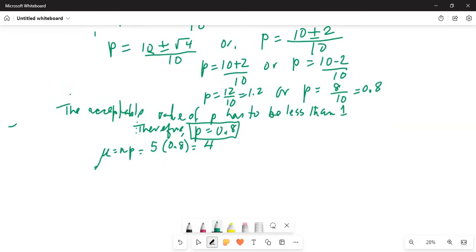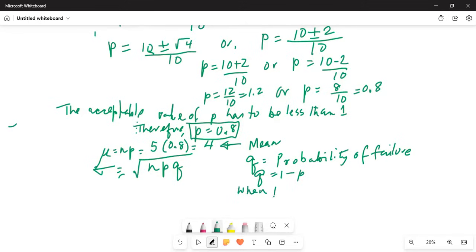Sigma is the standard deviation, which is square root of n times p times q. What is q? Q is the probability of failure. That's my tip. Probability of failure, q, is equal to 1 minus p. So when p is equal to 0.8, q is equal to 1 minus 0.8, which is 0.2. We have to remember that the probability of failure is 1 minus probability of success. In this case, 1 minus 0.8 equal to 0.2.